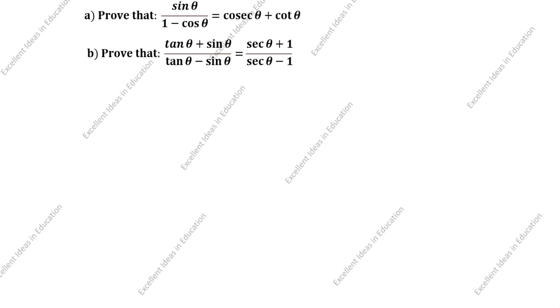Hi friends! Welcome to my channel Excellent Ideas in Education. Today we are going to solve this trigonometry identity problem. This is a very important problem. Prove that sin theta divided by 1 minus cos theta is equal to cosecant theta plus cot theta.